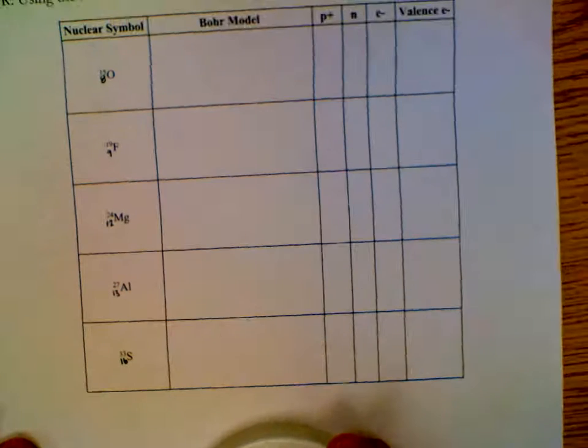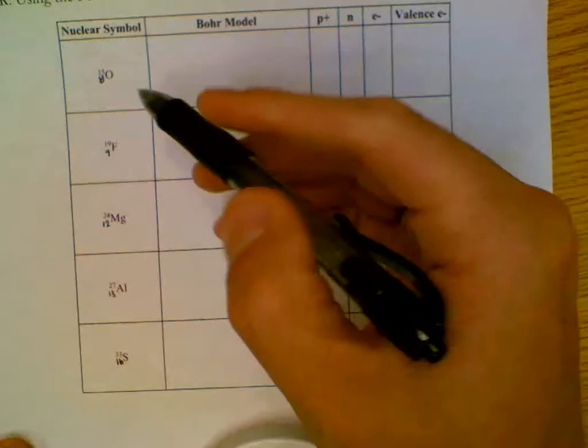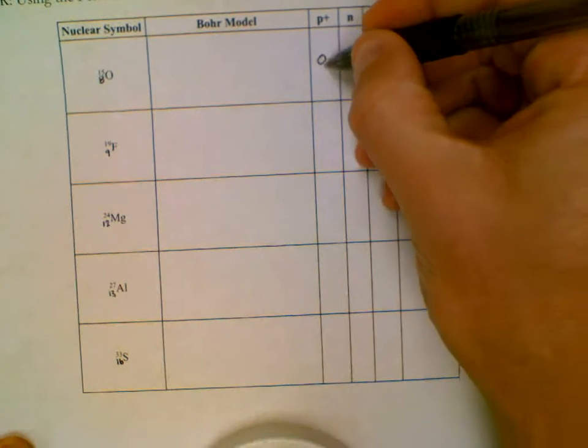For Bohr models, we can fill in P and E. The number of protons is the same as the atomic number, which is why we just filled that in.